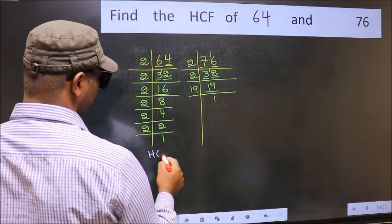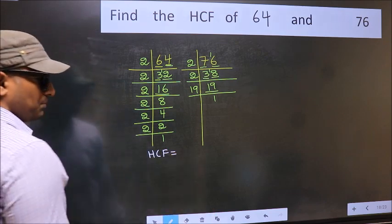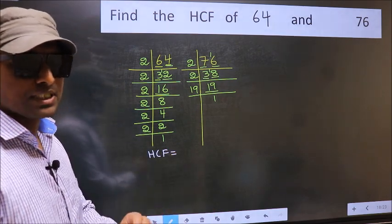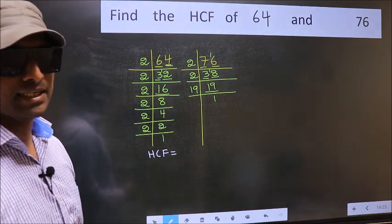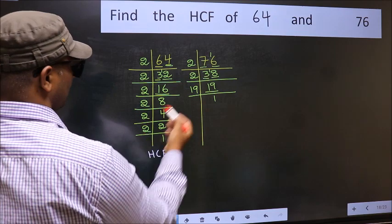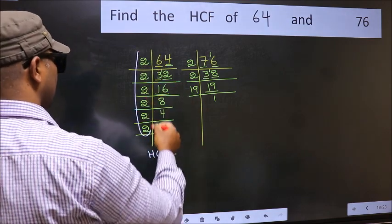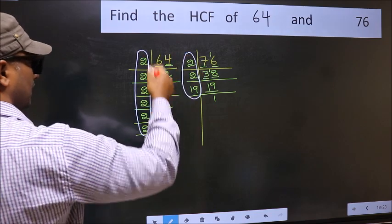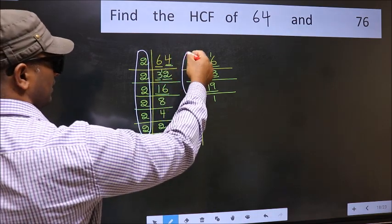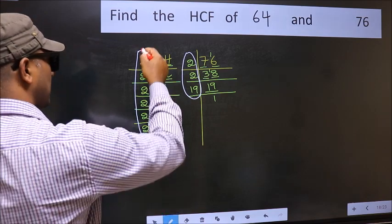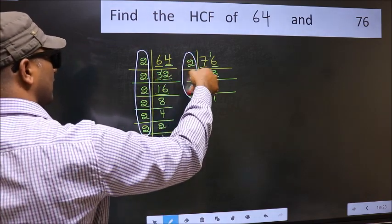Therefore our HCF is... HCF is the product of the numbers which should be present in these two places. That is here and also here. Here and here. So now let us find the numbers which should be present here and here.